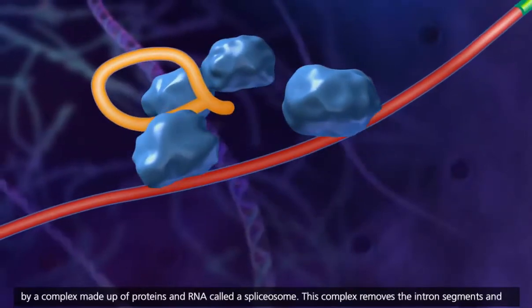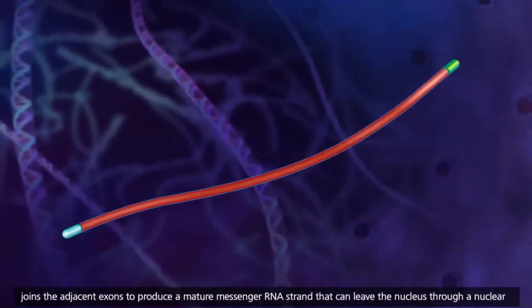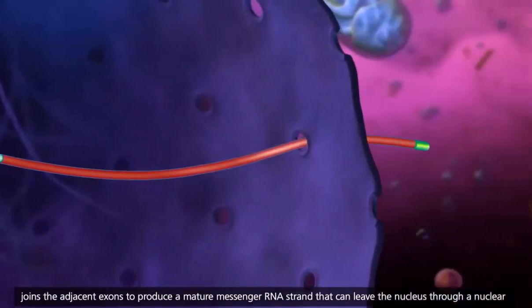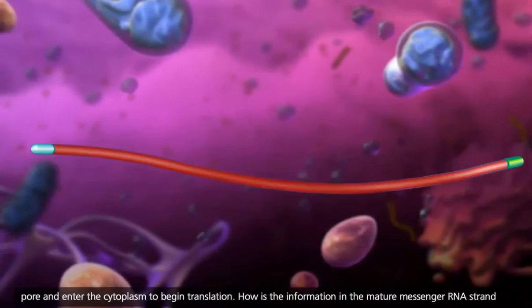This complex removes the intron segments and joins the adjacent exons to produce a mature messenger RNA strand that can leave the nucleus through a nuclear pore and enter the cytoplasm to begin translation.